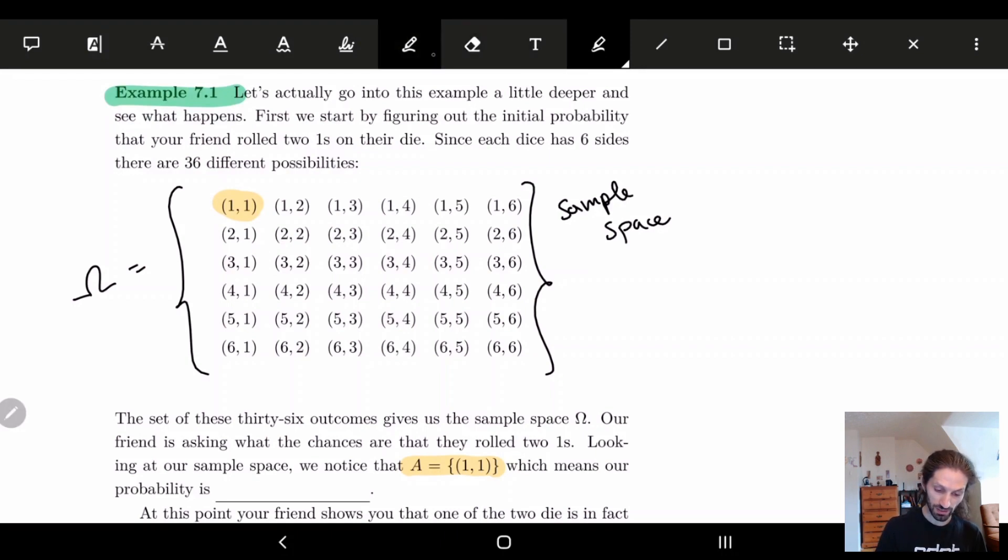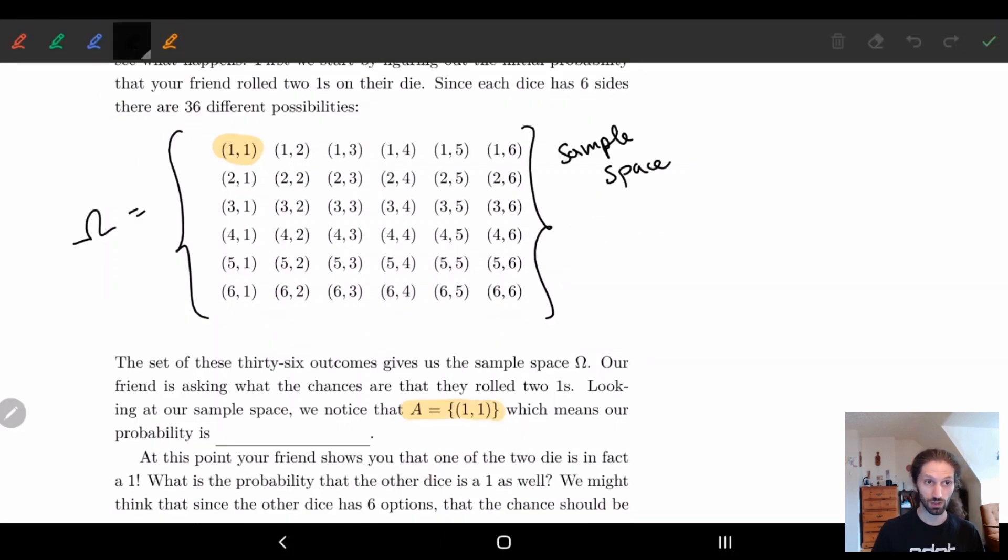And so we let A be equal to the subset (1,1). And this basically tells us what our probability is. So recall that the probability of our subset A is just the number of elements in A divided by the number of elements in our set omega. So here we have one element in the first thing, 36 elements in the bottom thing. And we know the probability is 1 in 36.